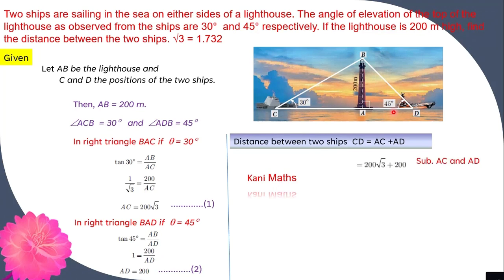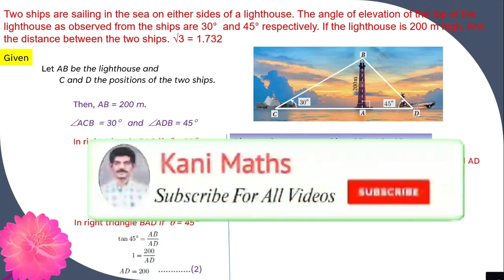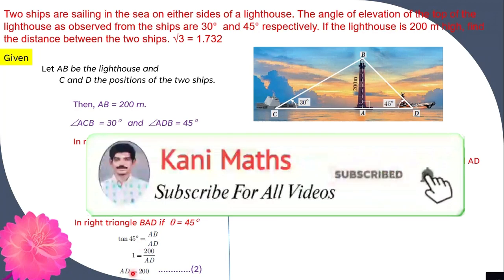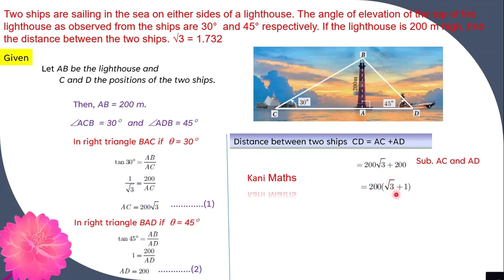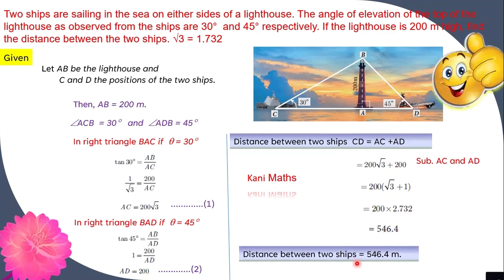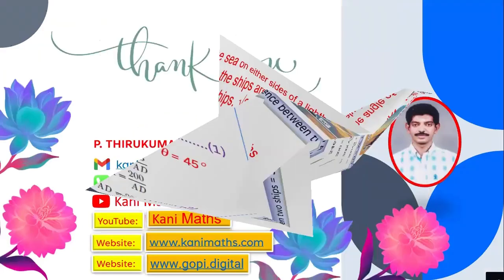So, CD equals 200 root 3 plus 200. Taking 200 common, 200 times root 3 plus 1.